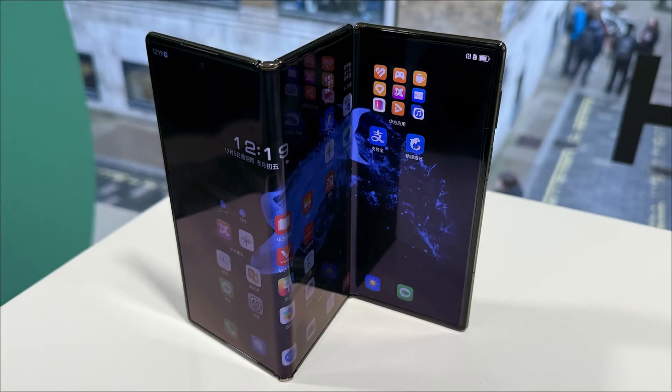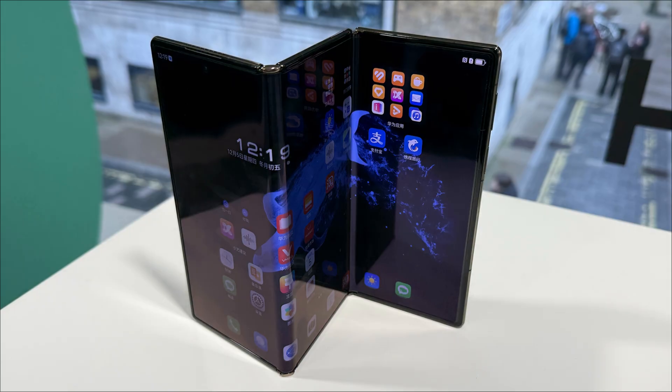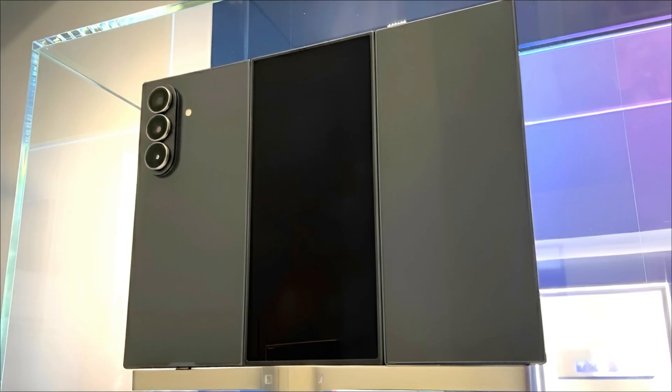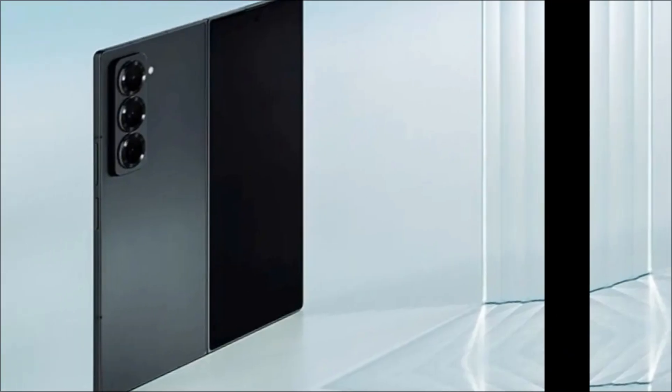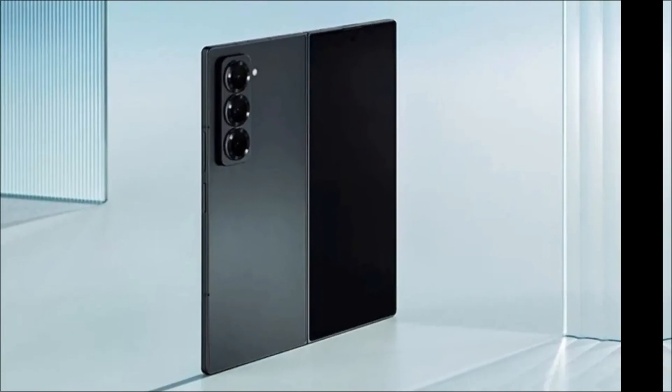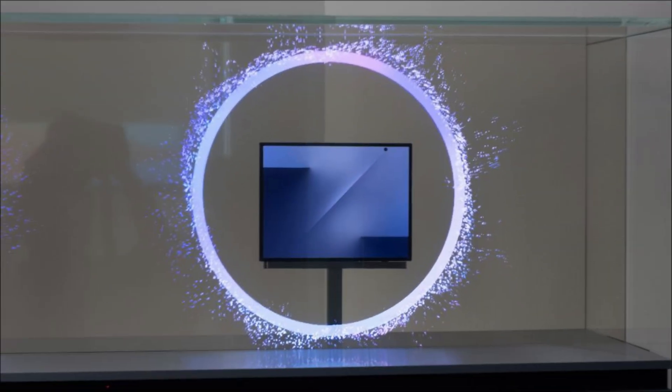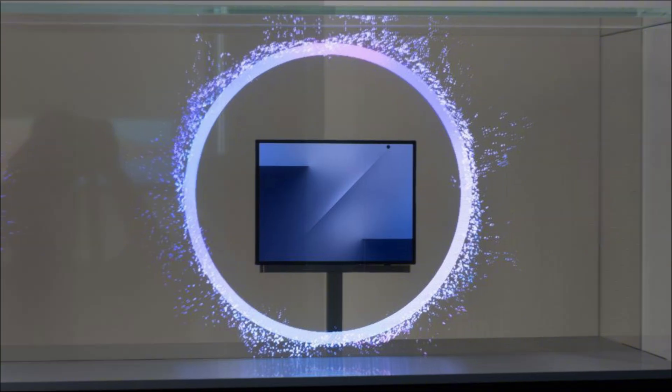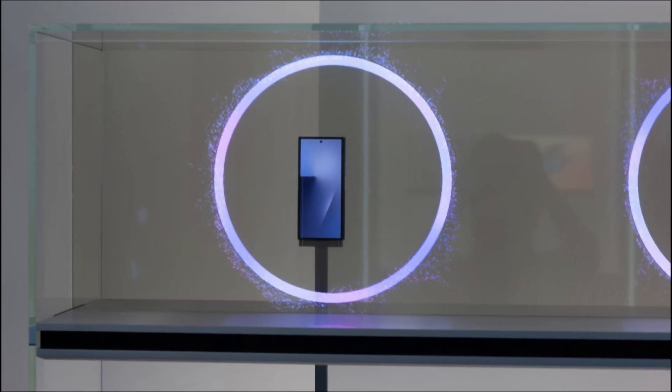The rear camera setup looks identical to the Z-Fold 7. Leaks suggest the same sensors: 200-megapixel main, 12-megapixel ultrawide, and 10-megapixel three-times optical zoom telephoto. Not seeing the 5x periscope zoom lens from the S25 Ultra on this Ultra Pro device is a major disappointment.